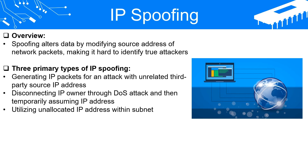IP spoofing can be classified into three primary types. The first method involves generating IP packets for an attack where the source IP address is set to that of an unrelated and uninvolved third party. This form of IP spoofing creates simplex or one-way communication for the attacker, where any response from the primary victim will be directed to the innocent third party. The logs pertaining to the attack incident will indicate the third-party device, which is innocent, as the one responsible.